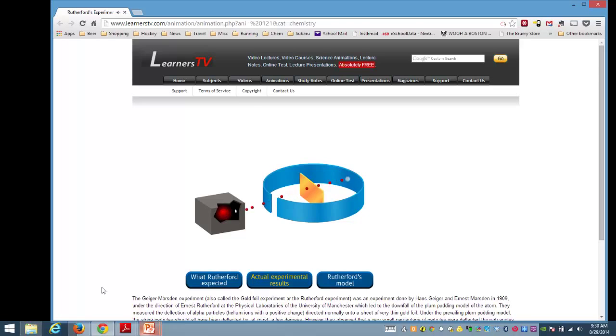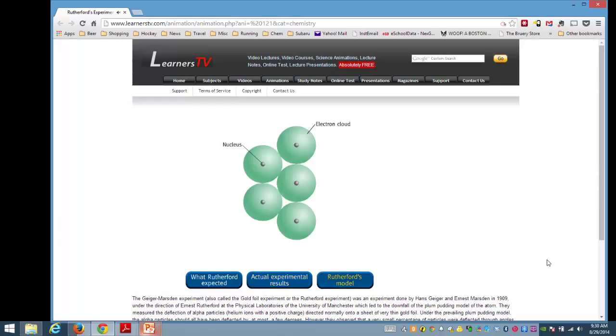Click on Rutherford's model to see the model of the atom that Rutherford proposed based on his experimental observations. Based on the results of his experiment, Rutherford postulated a nuclear atom. All of the positive charge and most of the mass of the atom is concentrated in a very small volume called the nucleus. Electrons occupy the remaining space of the atom. The radius of an atom is approximately 20,000 times larger than the radius of the nucleus.